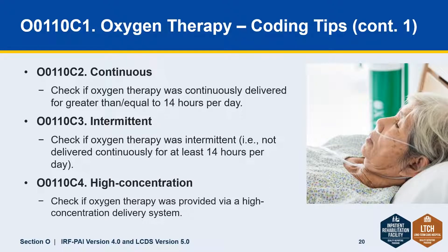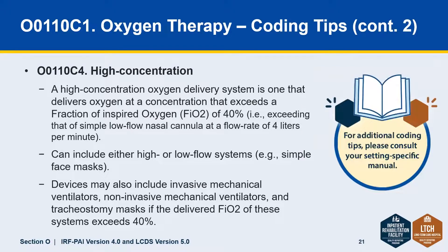C4, high concentration, would be the response if the oxygen therapy was delivered through a high concentration delivery system. A high concentration oxygen delivery system is one that delivers oxygen exceeding an FiO2 of 40%, meaning it exceeds that of a simple low flow nasal cannula at a flow rate of four liters per minute. These can include either high or low flow systems — for example, a simple face mask — and may also include devices such as invasive mechanical ventilators, non-invasive mechanical ventilators, and trach masks, but only if the delivered FiO2 of these systems exceeds 40%.